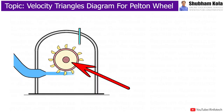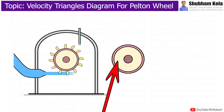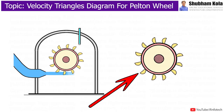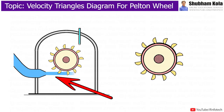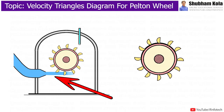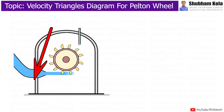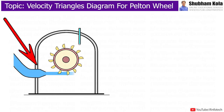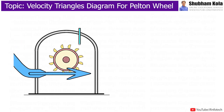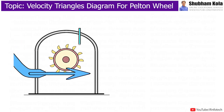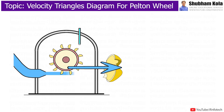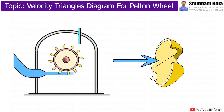The rotor of the Pelton Wheel Turbine consists of a large circular wheel driven by a jet of water being discharged from a nozzle. The nozzle is mounted in such a way that it directs the jet of fluid along a tangent to the circle through the centers of the buckets.